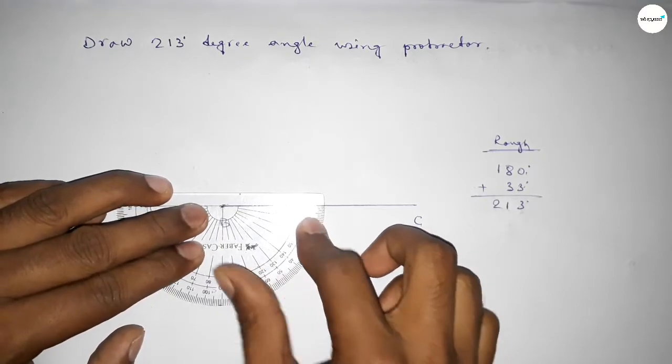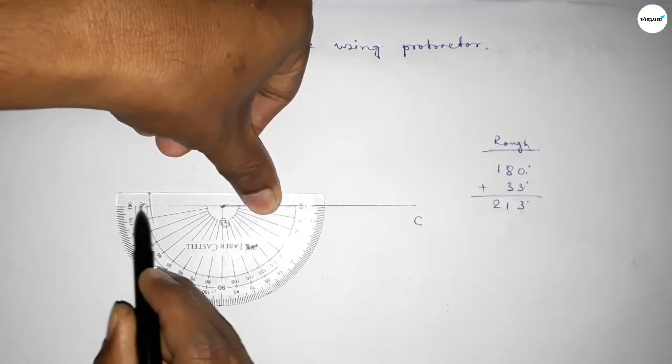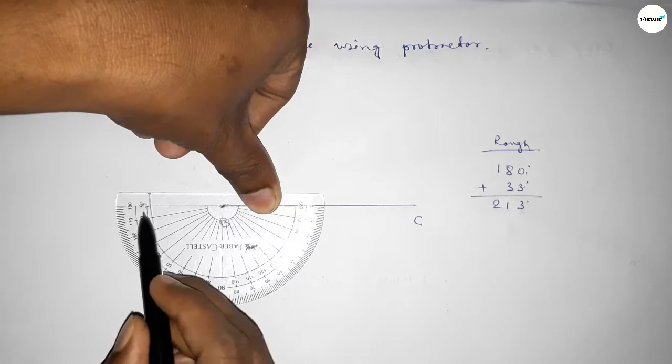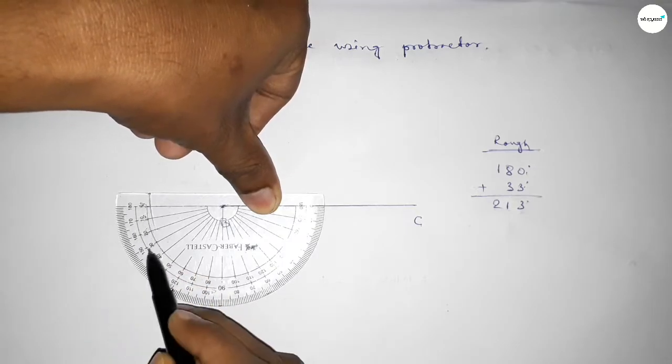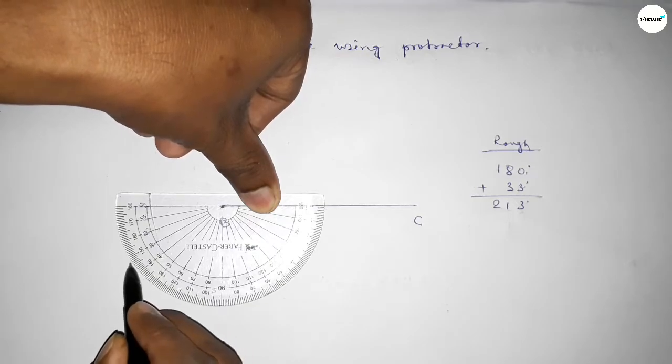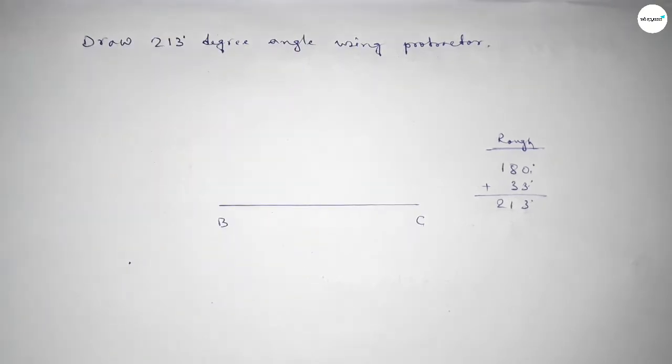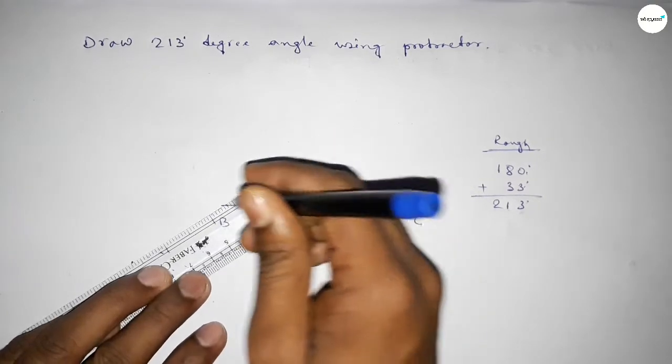So this is 180-degree angle. Now starting 0, 10, 20, 30, 31, 32, 33. Adding 33-degree angle with 180 degrees, we get 213-degree angle. Now joining this side and taking point A here.